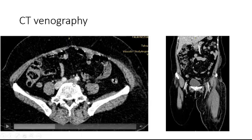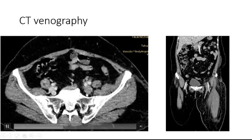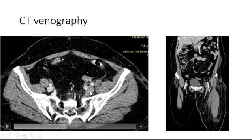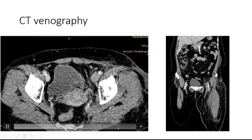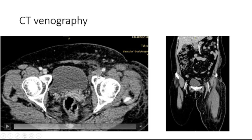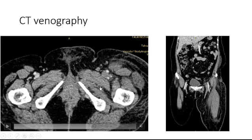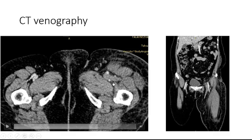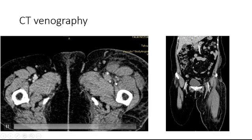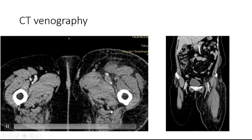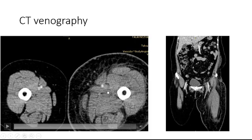Here you can see the occluded left common iliofemoral vein, and again the enlarged occluded left common iliofemoral vein with patent right common iliofemoral vein. Also visible: occluded left common femoral vein, occluded superficial saphenous vein, thrombotic occlusion of the left deep femoral vein, and occluded left superficial femoral vein.